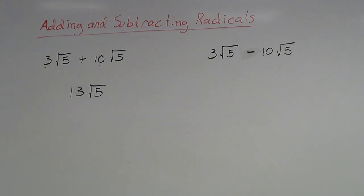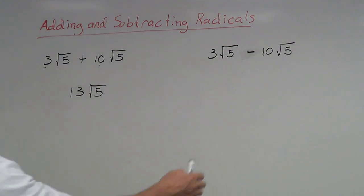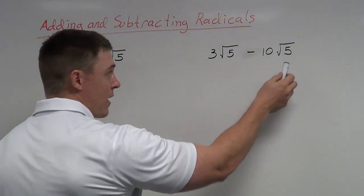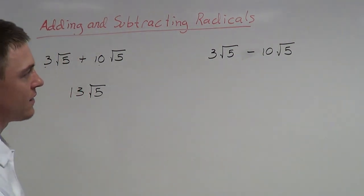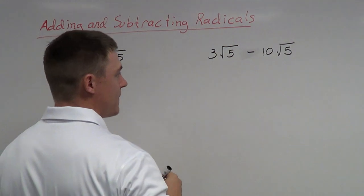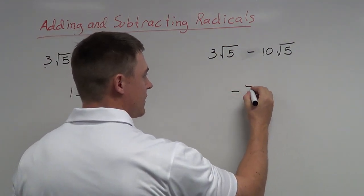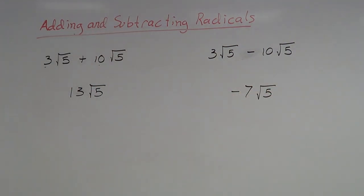The same process applies to subtraction. Looking at 3 root 5 minus 10 root 5 — I have the same radicals, so I take the coefficients and subtract them. Three minus ten is negative seven, giving me negative 7 root 5. It's perfectly okay to have a negative number outside of a radical.